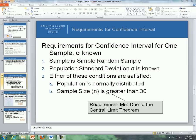This first slide is dealing with requirements for confidence intervals, very similar to requirements for doing a hypothesis test for one sample or one mean standard deviation known. The sample needs to be a simple random sample, the population standard deviation sigma is known, and then either one of these conditions are satisfied: the population is normally distributed, and/or the sample size is greater than 30. This last requirement is met due to the central limit theorem.